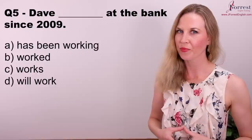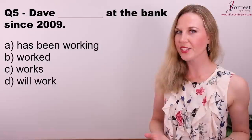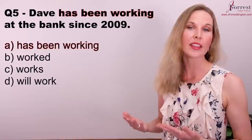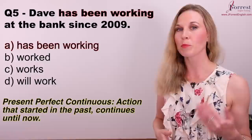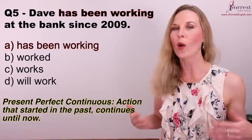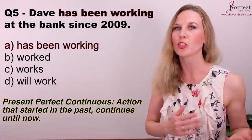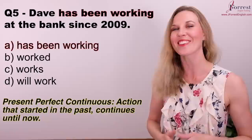Number five: Dave has been working at the bank since 2009. We're using the present perfect continuous because the action started in the past and continues until now. Dave started working at the bank in 2009, and he still works there today — so the action started in the past and continues until now.